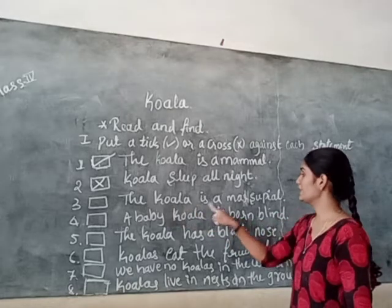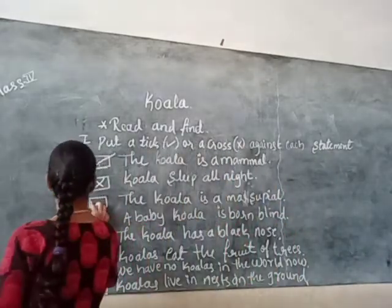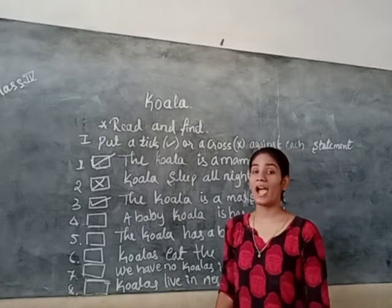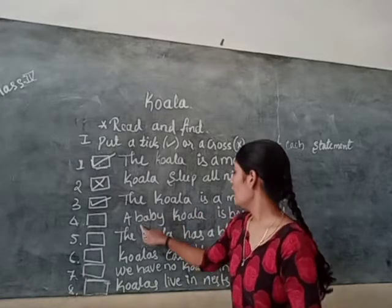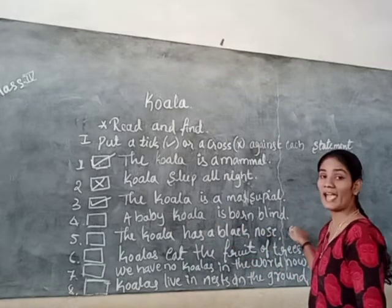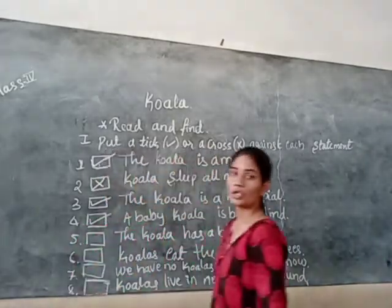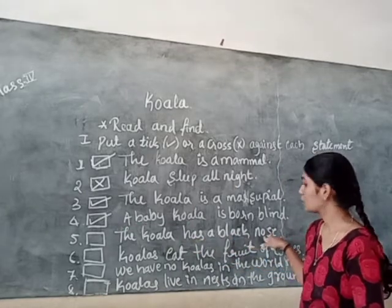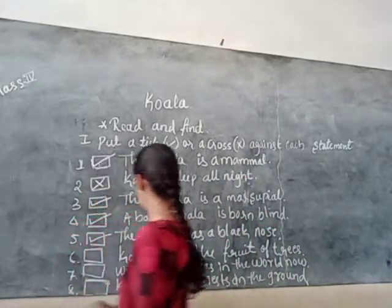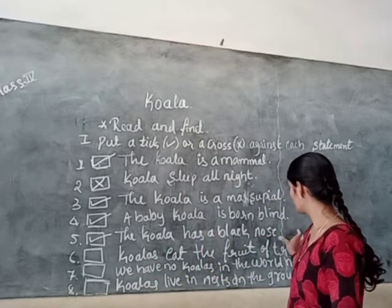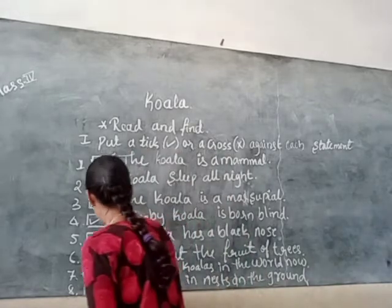The Koila is a marsupial — is it a marsupial? Yes. A marsupial is an animal which has a pouch on its body. A baby Koila is born blind — yes, this is correct. The Koila has a black nose — the color of the Koila's nose is black, so this is right. Koilas eat the fruit of trees — no, it eats leaves, not the fruits, so the statement is wrong.